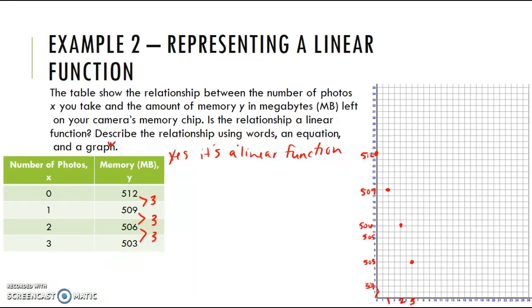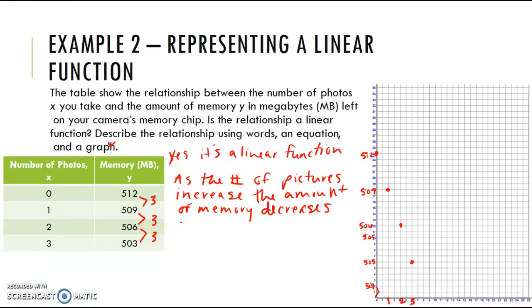I've already graphed it, so we're going to describe the relationship using words. I'm just going to look at this table. As the number of pictures increases, the amount of memory decreases by three times the number of photos, or three megabytes for each photo. That would be another way of writing that. Because that's what's happening.